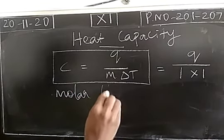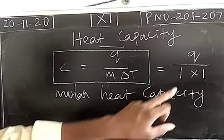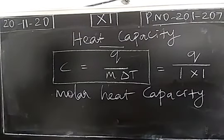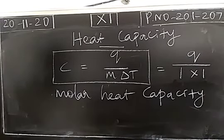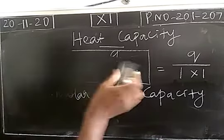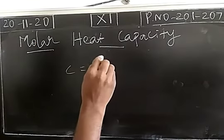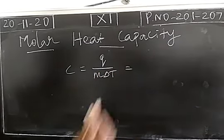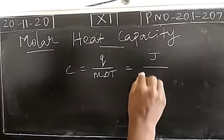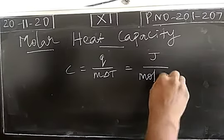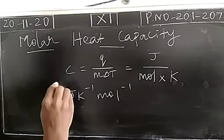The second type is molar heat capacity. It is defined as the heat absorbed by a system containing 1 mole of substance when the temperature difference is 1 Kelvin. Or we can say: how much heat is absorbed by 1 mole of substance to increase its temperature by 1 Kelvin? The unit of molar heat capacity is Joule per Kelvin per mole.